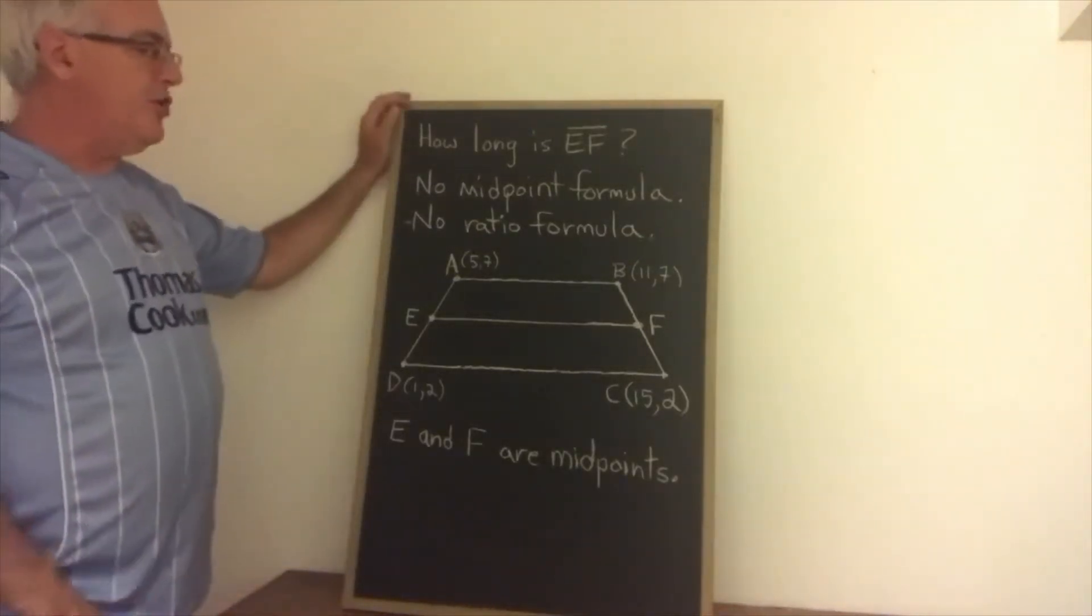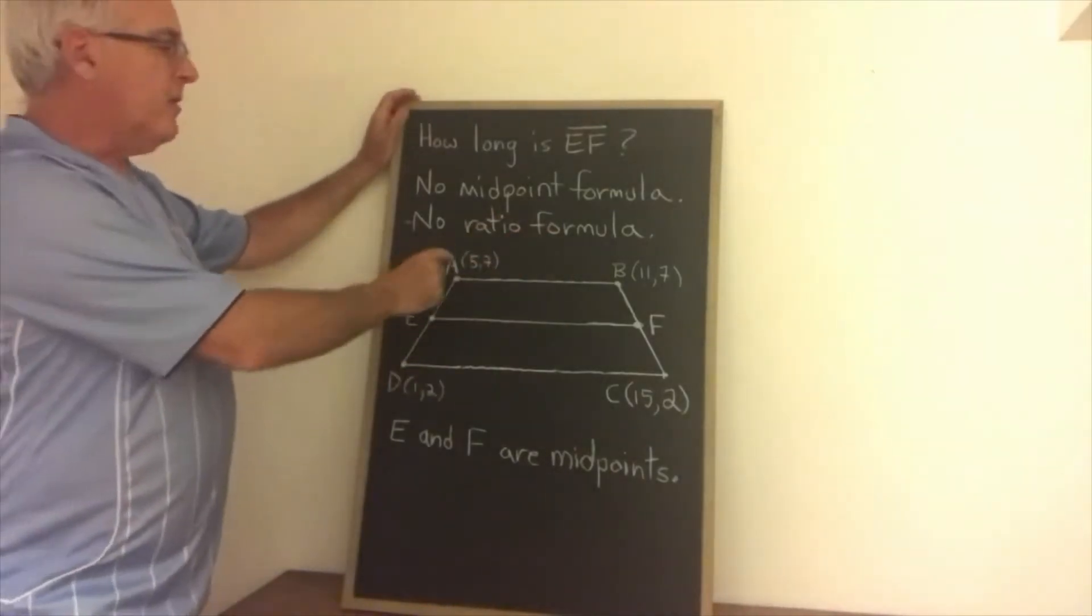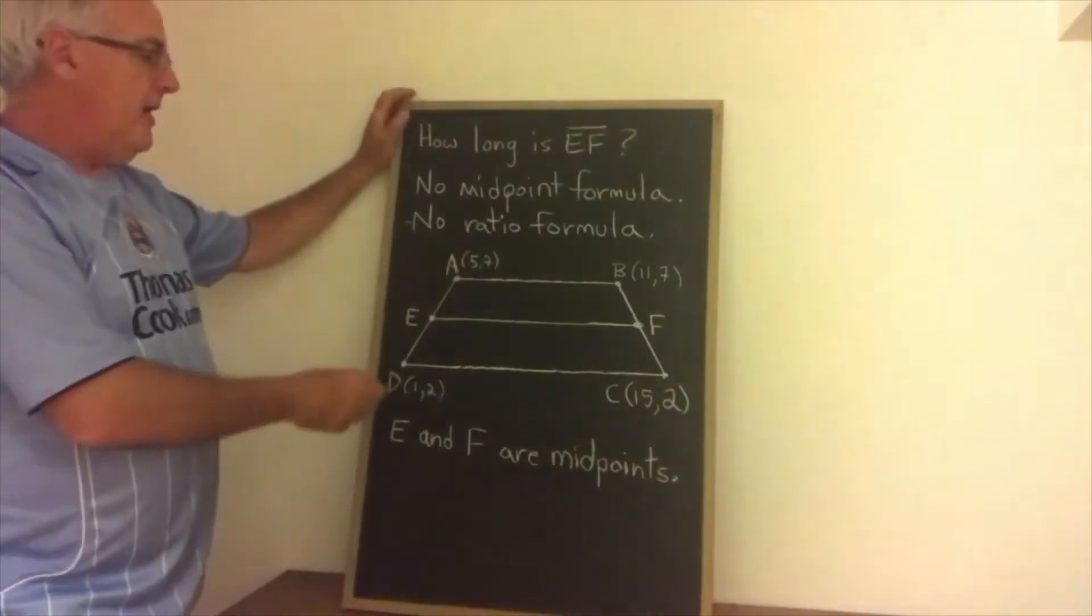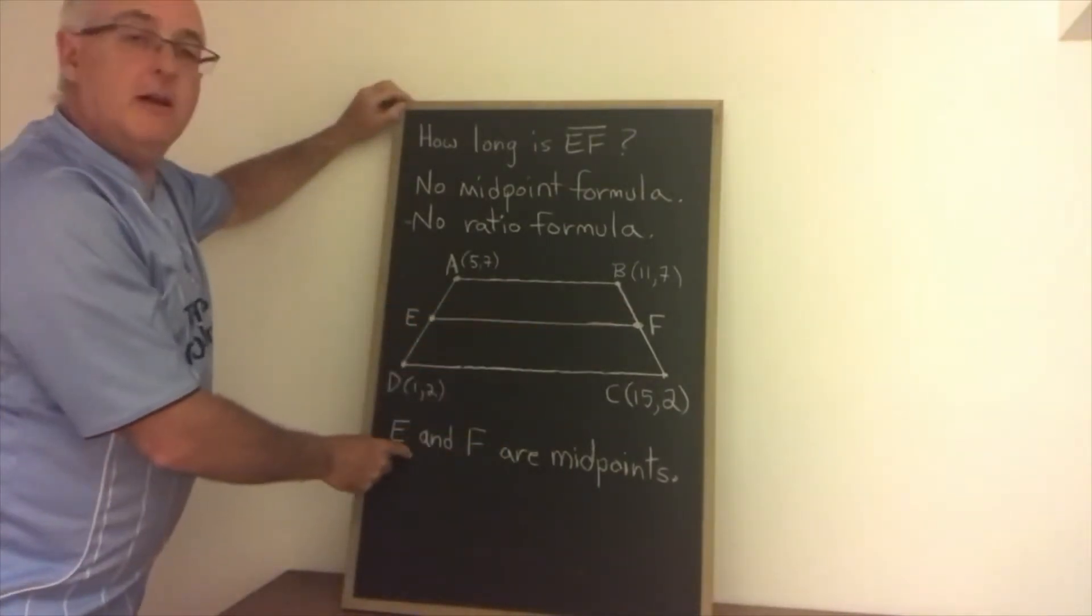Today's Daily Dose of Math is a geometry problem. We have a trapezoid ABCD with the coordinates of the vertices given. We have points E and F shown and a segment joining them, and we're told E and F are midpoints.